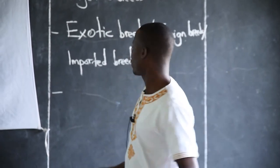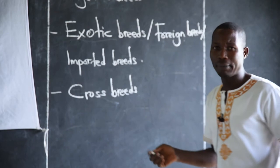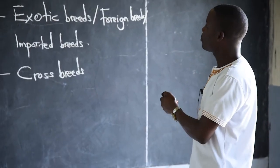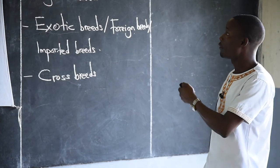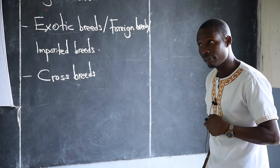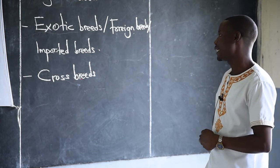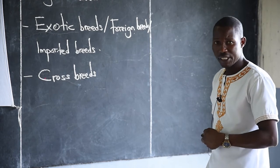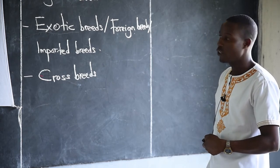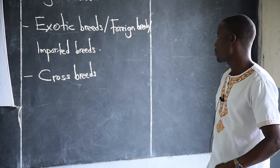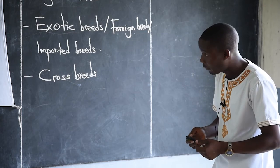The third type is cross breeds. Cross breeds are simply the product or result of mating local breeds and exotic breeds — they are a combination of the local and exotic. Looking at their characteristics, they are resistant to harsh climate and tick-borne diseases. They combine the local and exotic features, so they are very good. We can also call them hybrids.